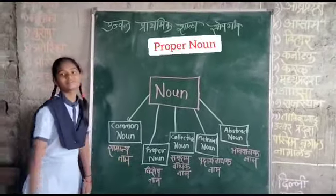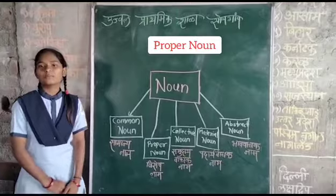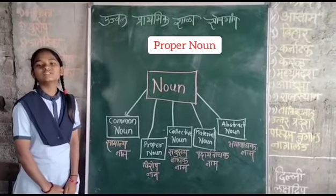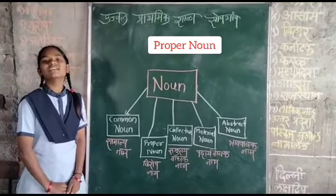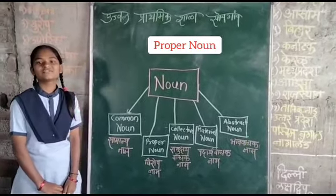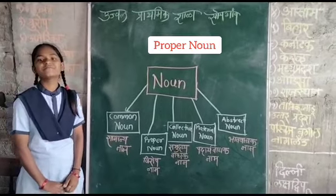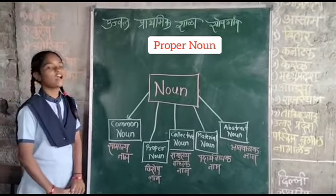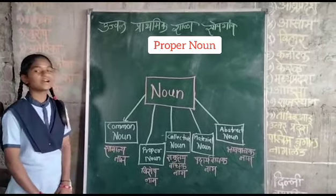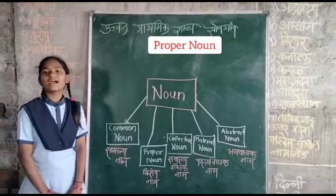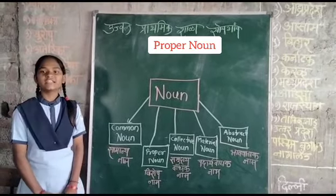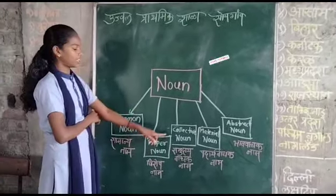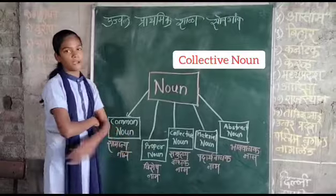Second is proper nouns. Proper nouns is the noun that serves as the name for a specific place, person or things. For example, Ganga, Maharashtra, India, Asia.